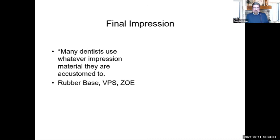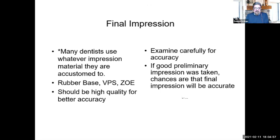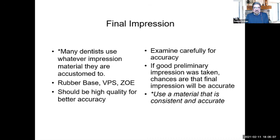Let's talk about final impressions and different materials. A lot of dentists get accustomed to the impression materials they've used over the years. I still see older materials like zinc oxide eugenol and rubber base, but I recommend the PVS materials — polyvinyl siloxane — for taking impressions. There are a lot of good high-quality materials out there now. Examine carefully for accuracy before you send it to the laboratory to make sure you captured all those anatomic landmarks needed for good retention. If a good preliminary impression was taken, chances are the final impression will be accurate.